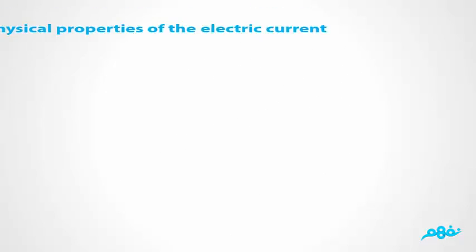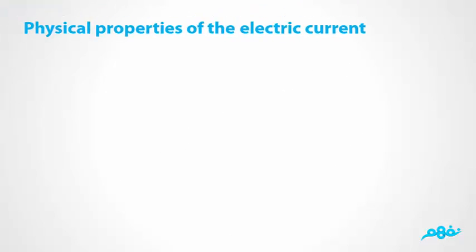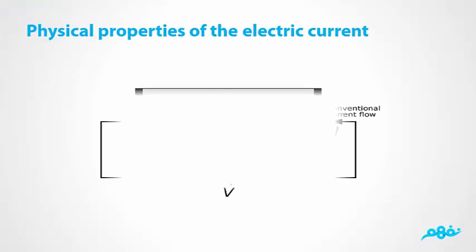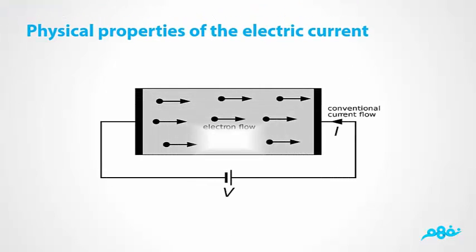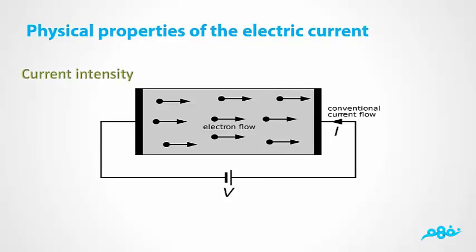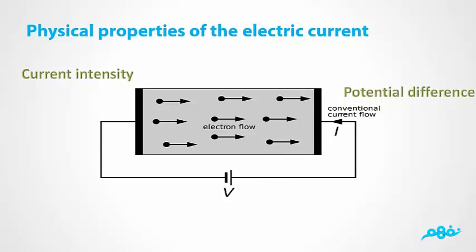Physical properties of the electric current: 1. Current intensity. 2. Potential difference. 3. Electric resistance.